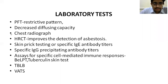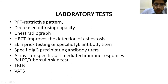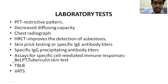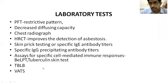We will also order chest X-rays, high resolution CT of thorax, skin prick testing or specific IgG antibody titers especially for hypersensitivity pneumonitis — specific IgG precipitating antibody titers and assays for specific cell-mediated immune responses. If expecting berylliosis, we do the BeLPT test. If expecting tuberculosis, which is commoner in silicosis patients, we do the tuberculin skin test. We also do invasive tests like transbronchial lung biopsy and video-assisted thoracoscopic surgery to obtain biopsy specimens.